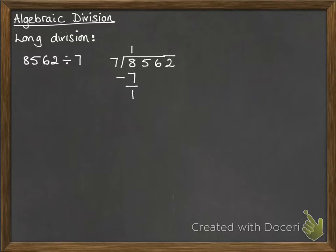You subtract it from what you started with to find the remainder and you have 1 left over. You bring down the 5, the next column over, to carry that 1 over into the next number. So then you think, how many 7s go into 15? That would be 2.